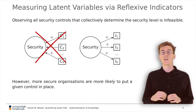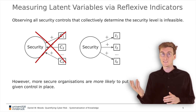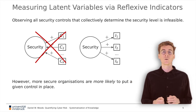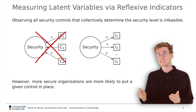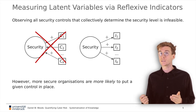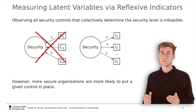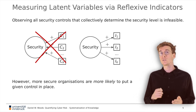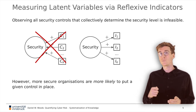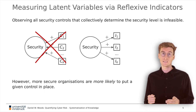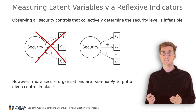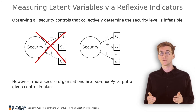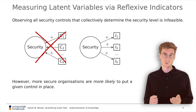We argue instead it is better to think of each control as an indicator of an unobserved security level. Thus, more secure organisations are more likely to implement each control, so a given control provides information about the overall security level regardless of its causal impact. For example, two-factor authentication does not mitigate web vulnerabilities. However, organisations who implement two-factor authentication are also likely to conduct more rigorous code review that reduces the likelihood of web compromise.